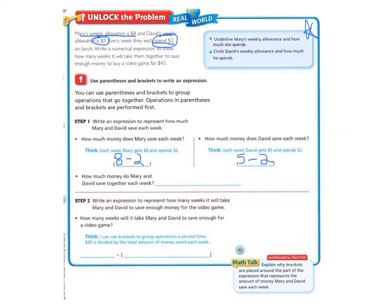How much money do Mary and David save together each week? Together they save $8 minus $2 plus $5 minus $2.